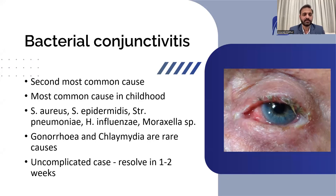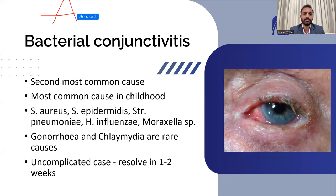The most common bacteria causing bacterial conjunctivitis are the same bacteria present on your body's surface as normal flora, like Staphylococcus aureus, Staphylococcus epidermidis, Streptococcus pneumoniae, H. influenzae, and Moraxella. Sometimes bacterial conjunctivitis can also be caused by gonorrhea and chlamydia, which are sexually transmitted diseases. Most uncomplicated cases resolve in one to two weeks.